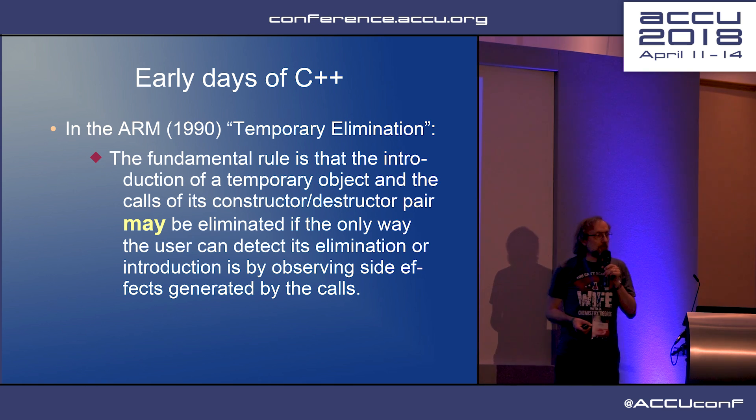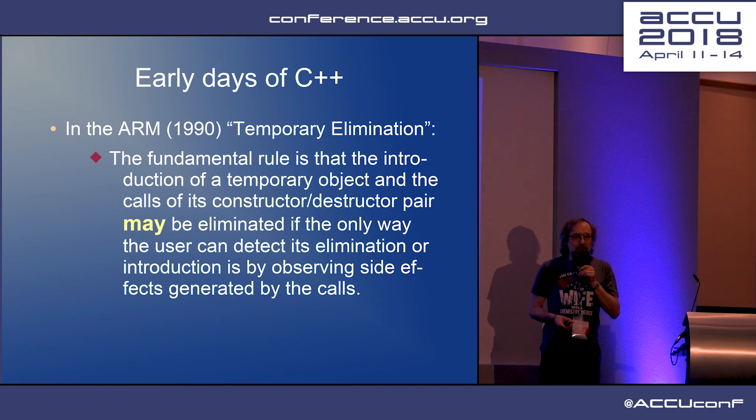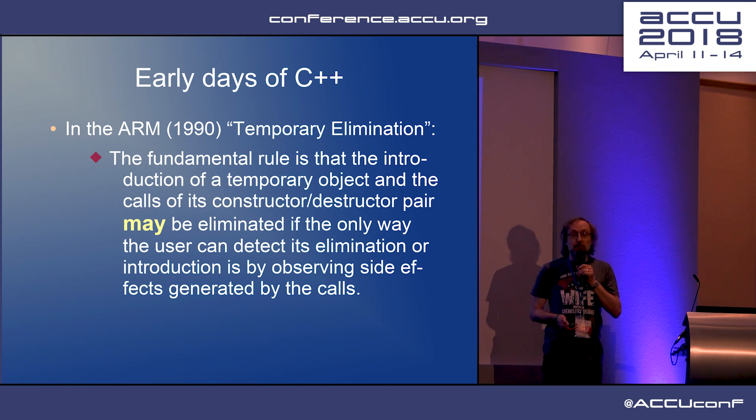Of course the problem is 'may or possibly may not.' How do you know? How do you tell? Well, you put a side effect into the copy construction and then you can tell. That's quite a useful thing to do — to detect whether you're getting copies or not. The other way is to play around with disassembly or look at something like Godbolt and see what the compiler is actually doing.